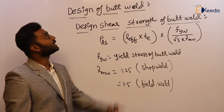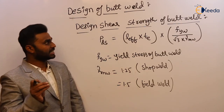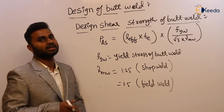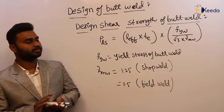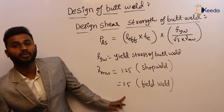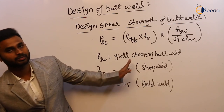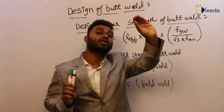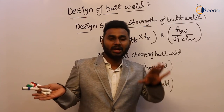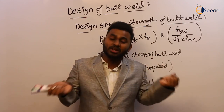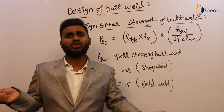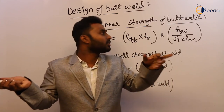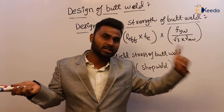Out of these two — design axial strength and design shear strength of butt weld — whichever is minimum is considered as the design strength of butt weld. Be careful about the factor of safety: 1.25 for shop weld, 1.5 for field weld. One important difference: in butt weld we use yield stress, but in fillet weld we use ultimate stress. In shear, more chance of rupture; but in the axial case, the material yields before rupture — just like applying axial tension to a mild steel wire, it yields before breaking. Wherever yielding occurs, consider yield stress.